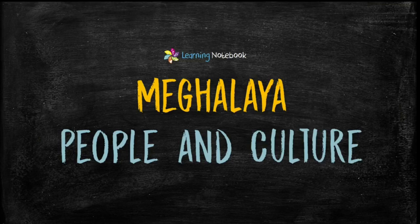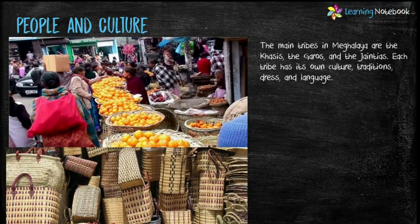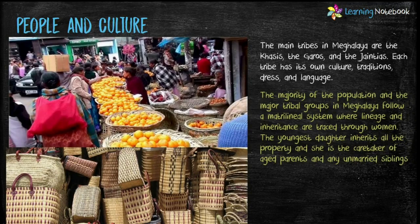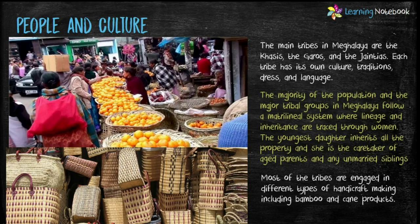Next is the people and culture of Meghalaya. The majority of the population and the major tribal groups of Meghalaya follow a matrilineal system where lineage and inheritance are traced through women. The youngest daughter inherits all the property and she is the caretaker of aged parents and any unmarried siblings.